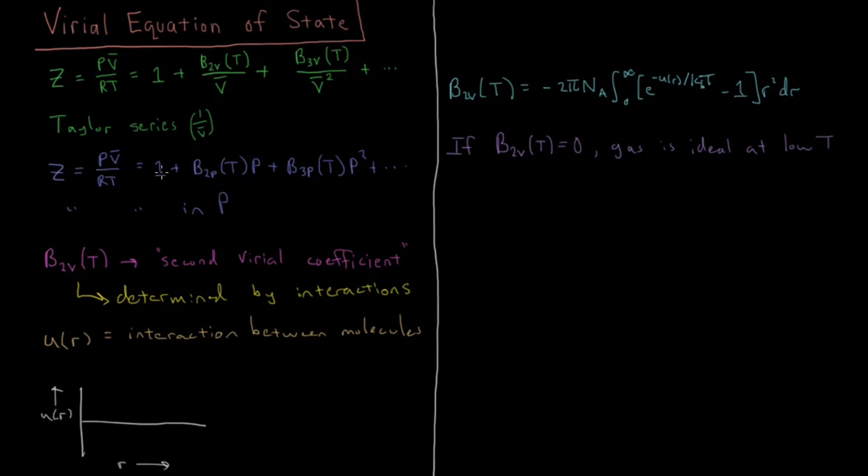So if it's zero, then the Z, our compressibility, is going to be one, and the gas is going to behave ideally until these third virial coefficients start to come into play. And if you have a gas which has a temperature where this is true, so if you have a T such that your second virial coefficient is zero, then that is referred to as the Boyle temperature.